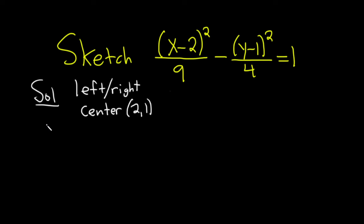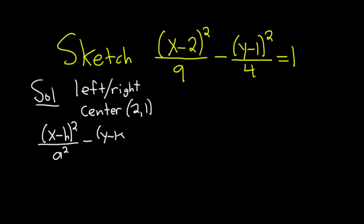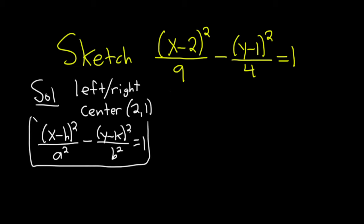The general formula, by the way, is x minus h squared over a squared — this is for a hyperbola that opens left and right — minus y minus k squared over b squared equals 1. So this is the general formula that we're using, and the center is h comma k.